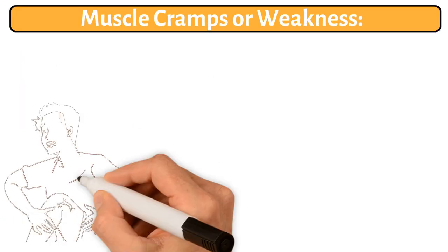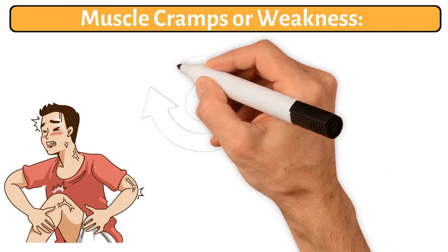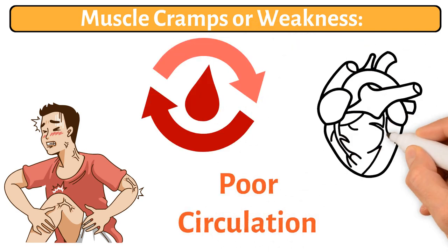15. Muscle cramps or weakness. If you experience muscle cramps or weakness, it might be due to poor circulation from an unhealthy heart.